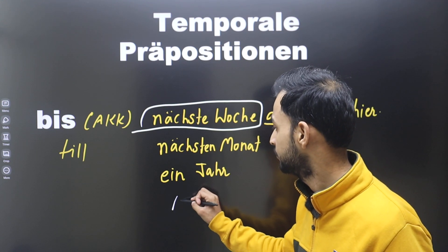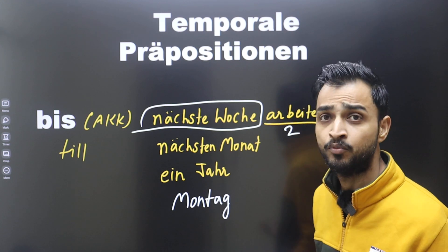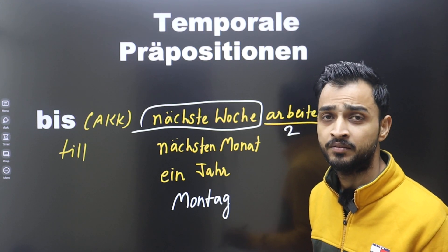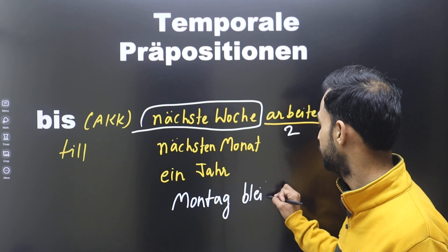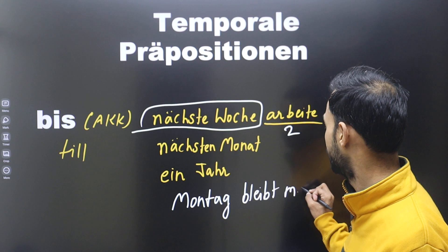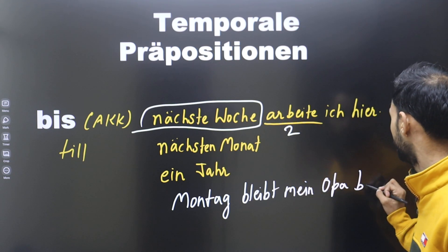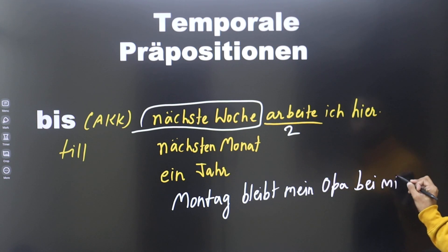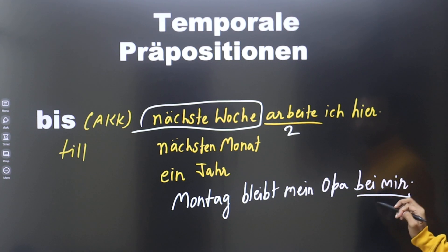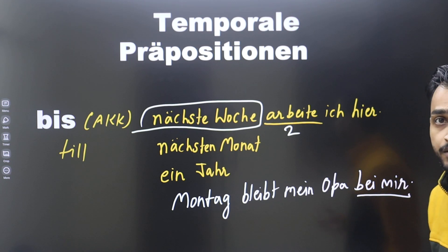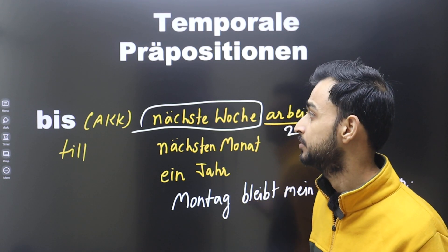'Bis Montag' — you can write any day name. For example: 'Bis Montag bleibt mein Opa' — till Monday my grandfather stays. 'Bleibt bei mir hier' means he stays with me here. So till Monday my grandfather stays with me, after that he will go.